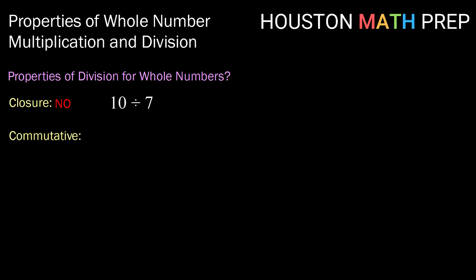What about the commutative property? Let's think about 8 divided by 2. Eight divided by 2 is 4. But if we swap those numbers around, 2 divided by 8 is not even defined for whole numbers, so it certainly is not equal to 4. So division is not commutative for the whole numbers.